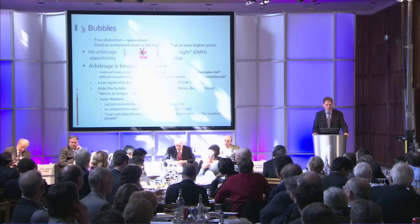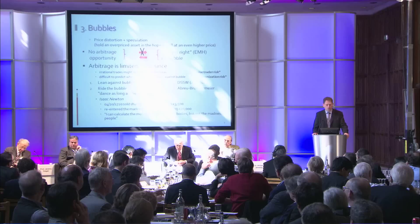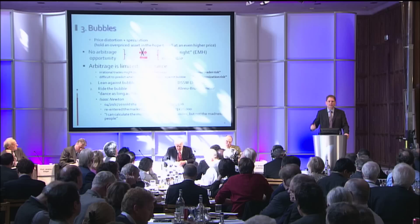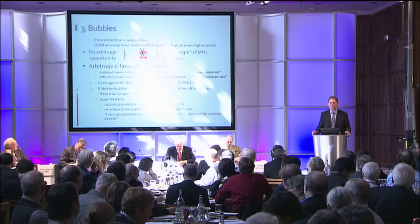A particular way where you see the efficient market hypothesis violated most strongly is when you look at bubbles. What are bubbles? Bubbles are price distortions, but they have on top of that a speculative component. You might be willing to hold an asset which is overpriced — you think it's overpriced — but you hold it only because you think you can sell it at an even higher price to somebody else in the future. That's the greater fool theory, which is a very important component of bubbles.